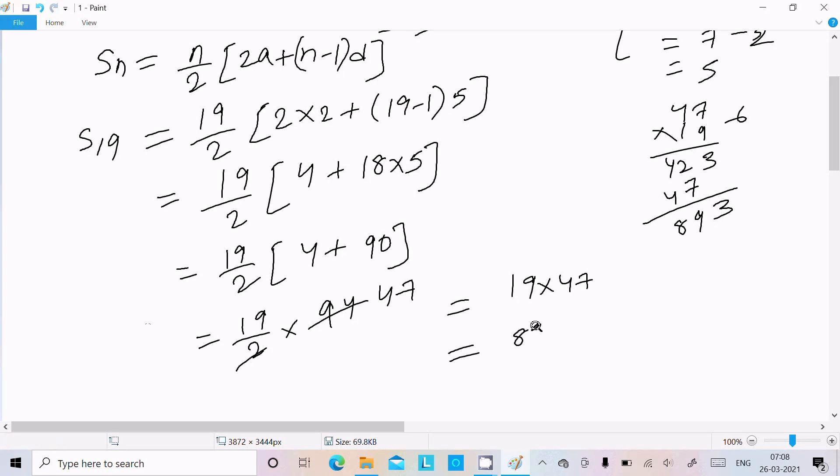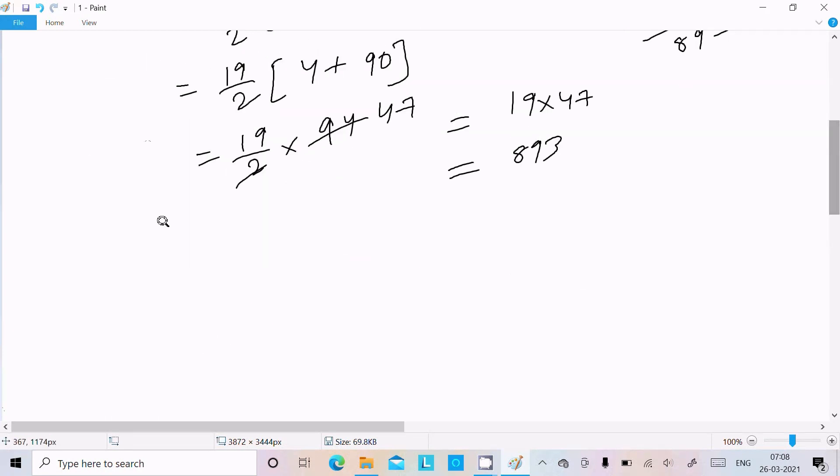So sum of 19 terms, S_19 is 893. So this is the answer, sum of 19 terms.